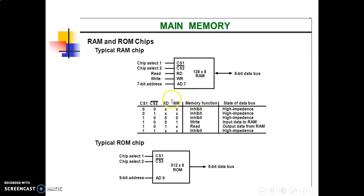The function table of this RAM is given here. We can see that this RAM only works in two conditions: when chip select 1 has value one and chip select 2 bar has value zero. If read is zero and write is one, then RAM accepts input data. If read is one and write is zero, then output data from RAM occurs.